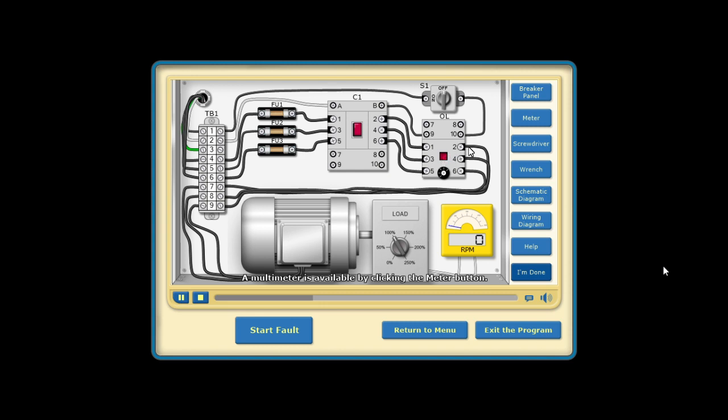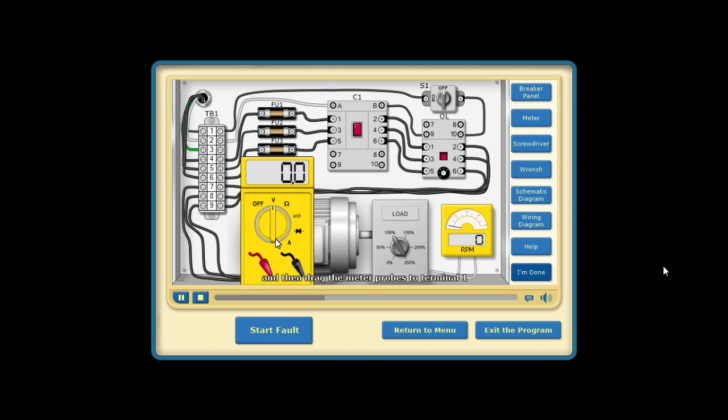A multimeter is available by clicking the meter button. To measure the control voltage, select the voltage scale and then drag the meter probes to terminal 1 and terminal 2. Note the meter reading.